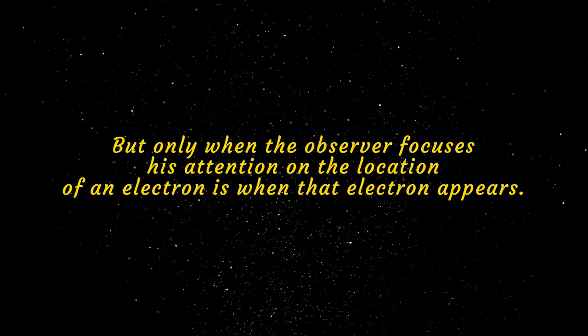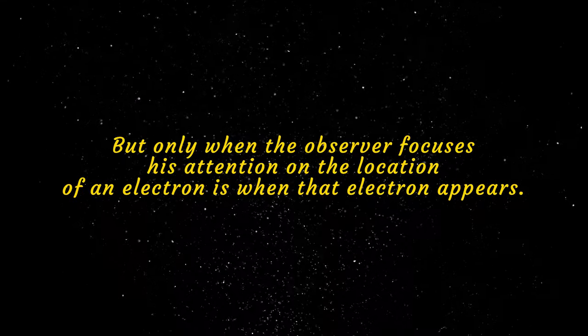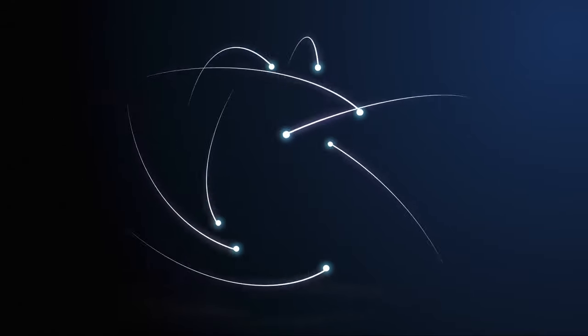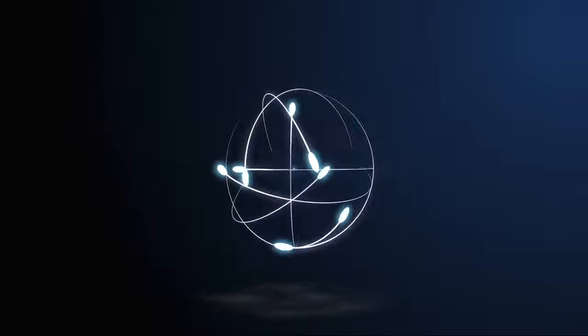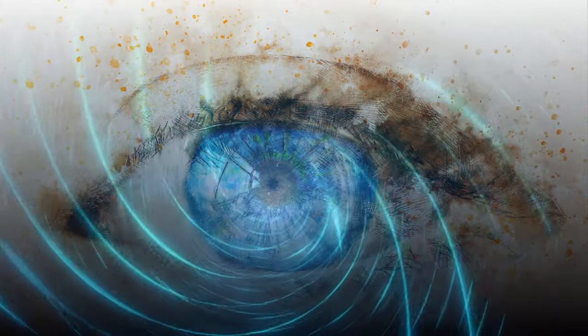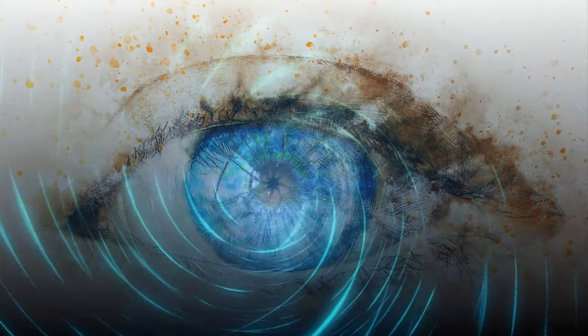But only when the observer focuses his attention on the location of an electron is when that electron appears. In short, a particle cannot manifest itself in reality. That is to say, a particle cannot manifest itself in space-time as we know it until it is observed.